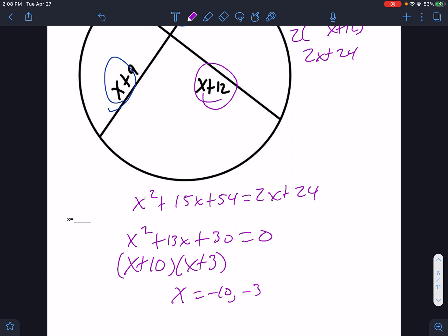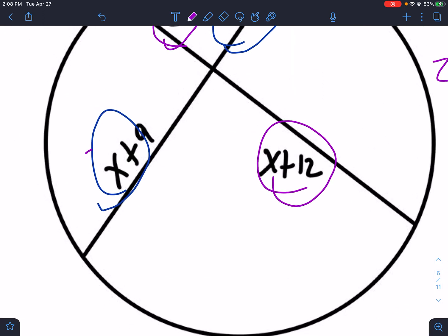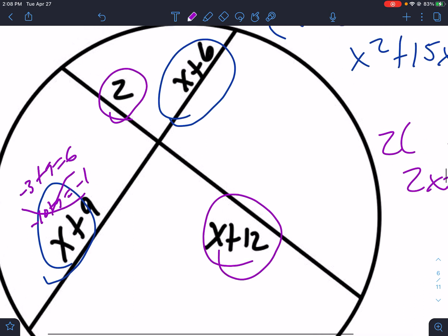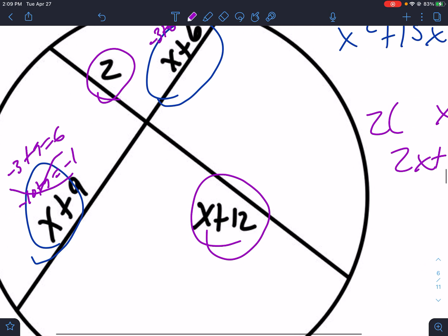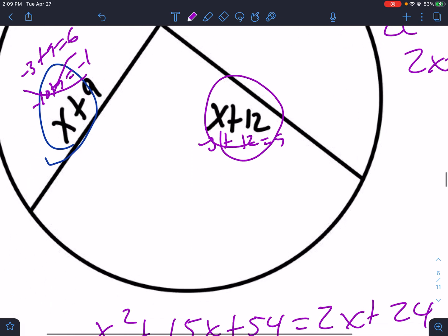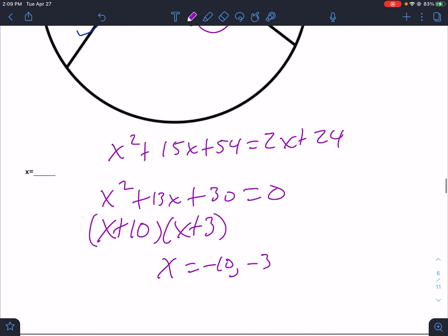Now we have to test them out. If I plug in negative 10, negative 10 plus 9 is negative 1. Nope. So that's out. If I plug in negative 3, negative 3 plus 9 equals 6. That's okay. Negative 3 plus 6 is 3. That's okay. Negative 3 plus 12 is 9. That's okay. So negative 3 works everywhere.